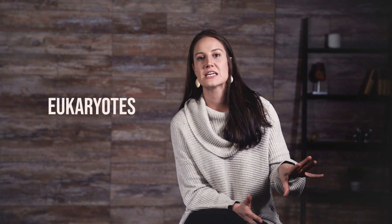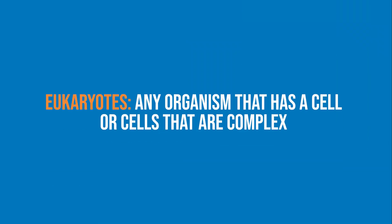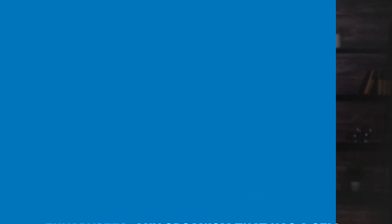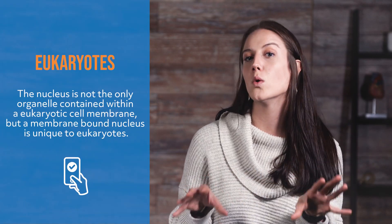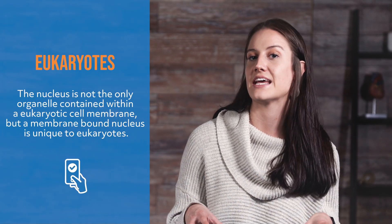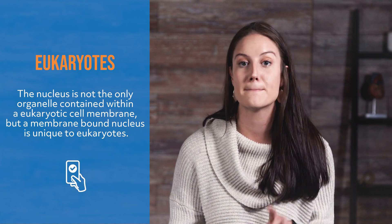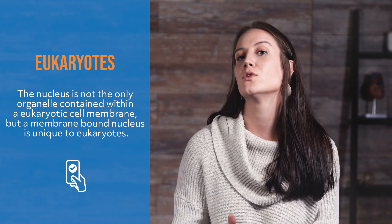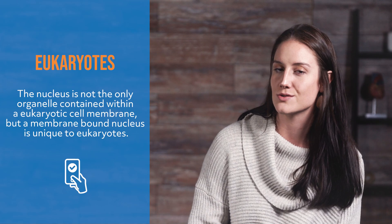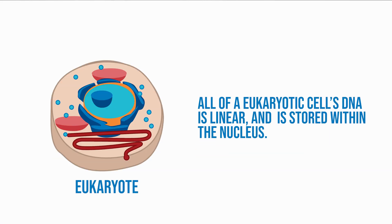Eukaryotes can be defined as any organism that has a cell or cells that are complex. More specifically, they have a membrane-bound nucleus where all their genetic information is stored. The nucleus is not the only organelle contained within a eukaryotic cell membrane, but a membrane-bound nucleus is unique to eukaryotes. All of the eukaryotic cell's DNA is linear and is stored within the nucleus.